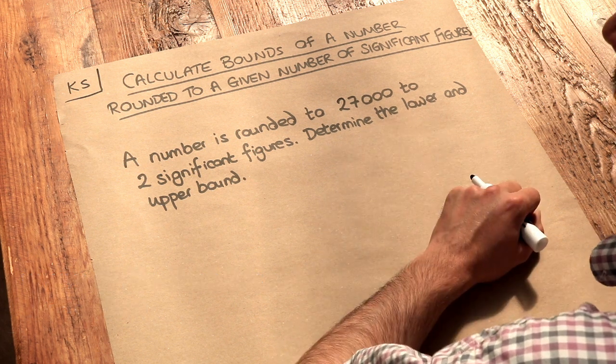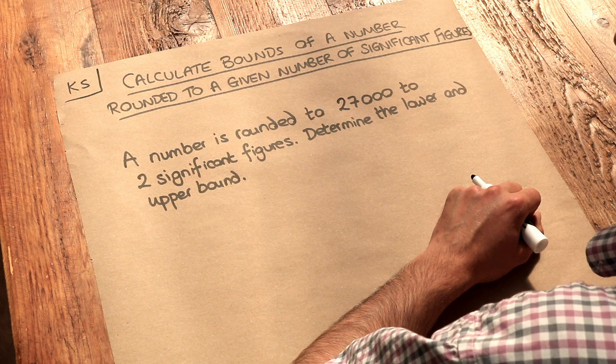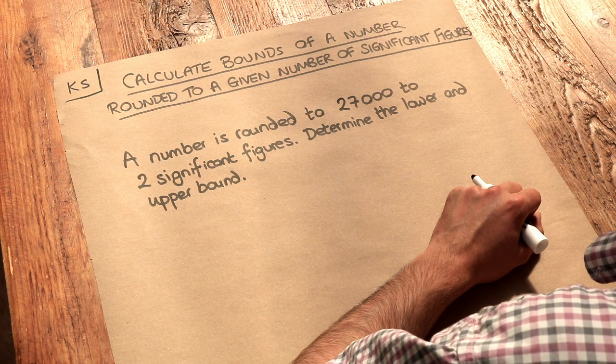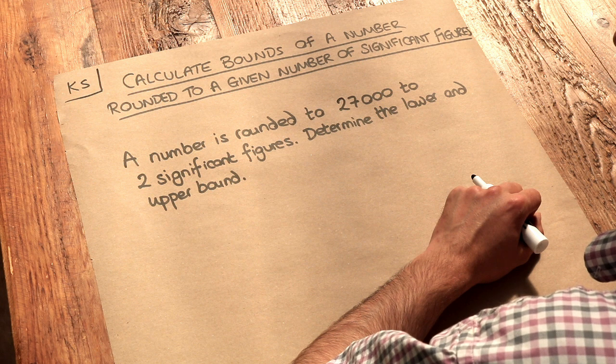We have this problem here. A number is rounded to 27,000 to two significant figures. Determine the lower and upper bound.